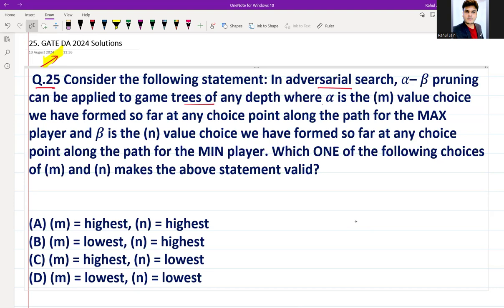Where alpha is the m value choice we have formed so far at any particular choice point along the path of the max player, and beta is the n value choice we have formed so far at any choice point along the path for the min player.